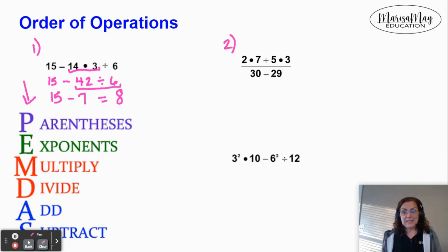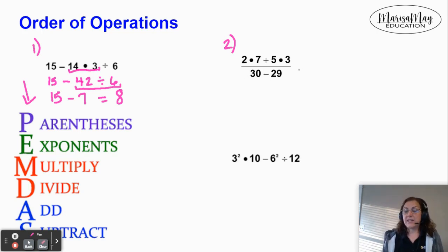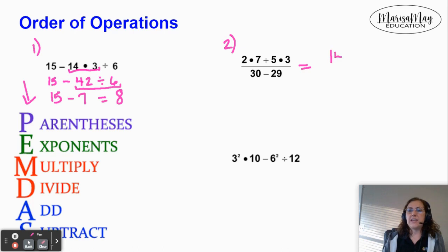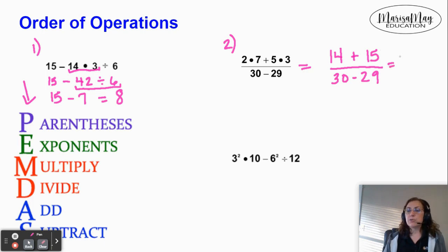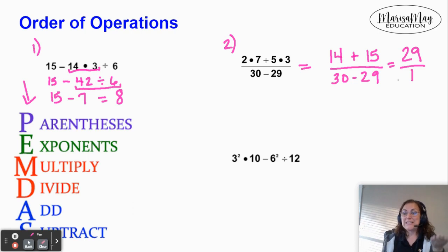If we look at problem number two, it looks a little different because we have division going on with the fraction bar. What we do is follow the order of operations on the top, follow the order of operations on the bottom, and then divide at the end. On the top I see multiplication, addition, and multiplication again. Order of operations tells us to multiply first. So 2 times 7 gives me 14, and 5 times 3 gives me 15. On the bottom we have 30 minus 29. Next on the top, we do the addition: 14 plus 15 gives me 29. On the bottom, 30 minus 29 gives me 1. The fraction bar means divide, so 29 divided by 1 gives me 29 — and that's my answer.